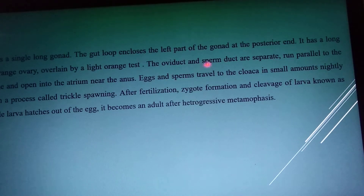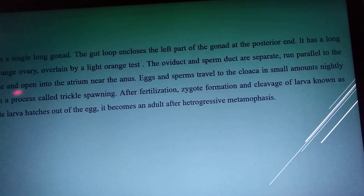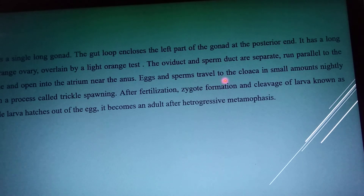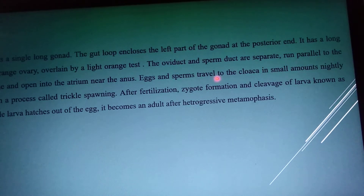Oviduct and sperm duct are separate and run parallel to each other. Near the intestine and atrium near the anus, the egg and sperm travel to the cloaca in the same amount.